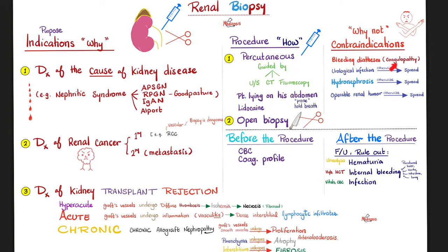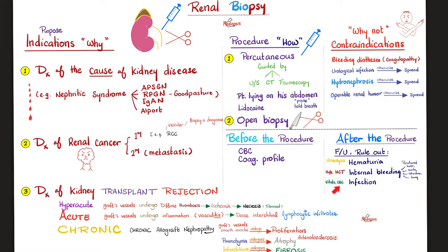Before the procedure, make sure the patient does not have a coagulation defect by ordering a CBC and coagulation profile. After the procedure, make sure the patient is not bleeding anywhere — no hematuria, no internal bleeding, and no infection from the needle. For hematuria, look at the urine via urinalysis. For internal bleeding, compare hemoglobin and hematocrit before and after the procedure — a drop may suggest bleeding. For infections, monitor the patient's vital signs for fever, hypotension, tachycardia, etc., and look at the leukocyte count.